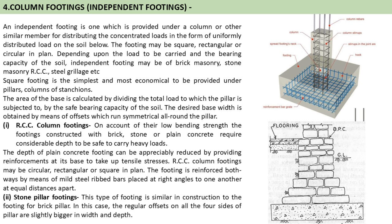Square footing is one of the simplest and most economical, provided under pillars, columns, and stanchions. The area of the base is calculated by dividing the total load the pillar is subjected to by the safe bearing capacity of the soil. The desired base width is obtained by means of offsets which run symmetrically all around the pillar. For RCC column footings — which can be done in circular, rectangular, or square plan — the depth of the plain concrete footing can be appreciably reduced by providing reinforcement at its base to take up the tensile stresses. As seen in the image, mild steel bars are placed at right angles to one another at equal distances for the reinforcement.